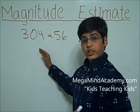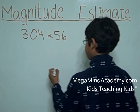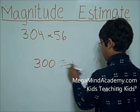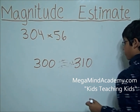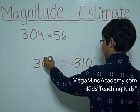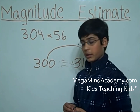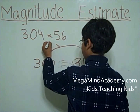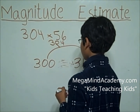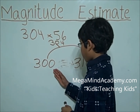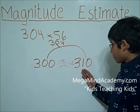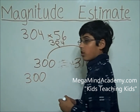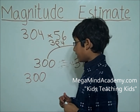Let's round 304 to the nearest tens. 304 falls between 300 and 310. Now let's make the line. Where on this line would 304 about be? 304 would probably be right here. It is closer to 300 than to 310, so we're going to put it down as 300. 304 rounded to the nearest tens is 300.